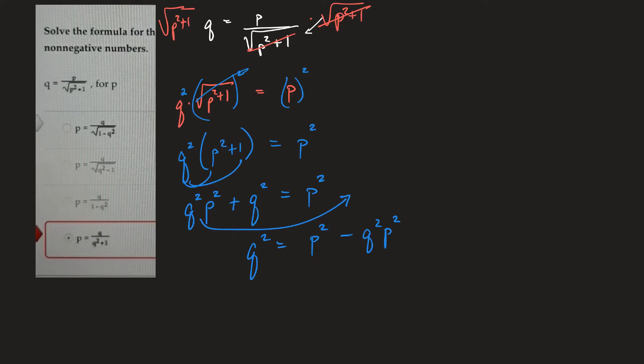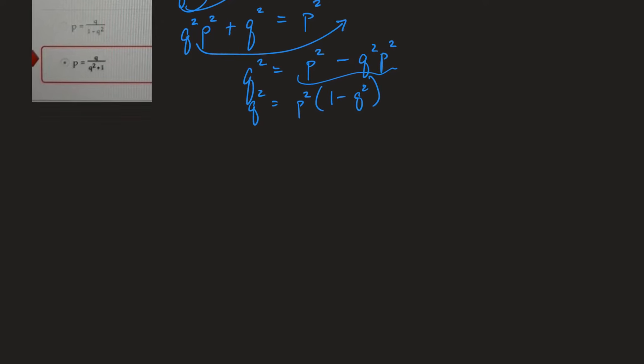Now here's the p's together so I can factor the p squared out. So factor p squared out left with 1 minus q squared is equal to q squared. And then I'll divide both sides by 1 minus q squared. So q squared over 1 minus q squared is equal to p squared.